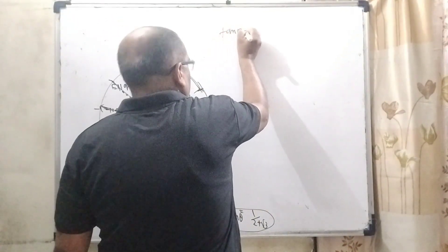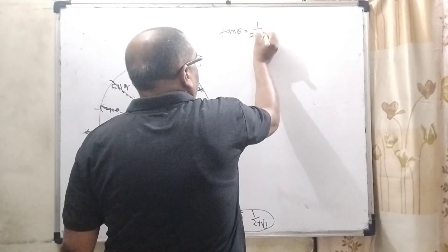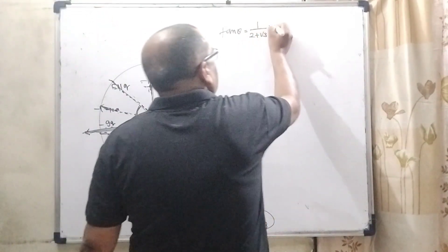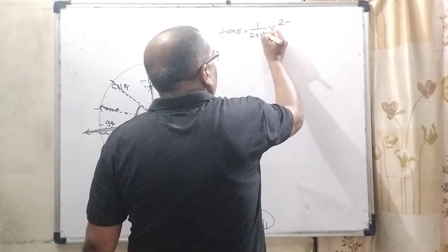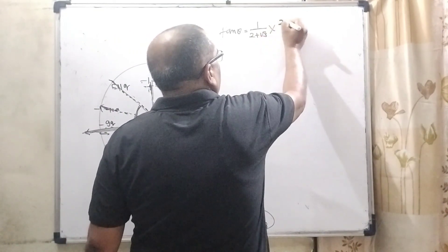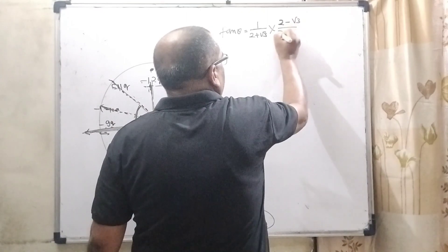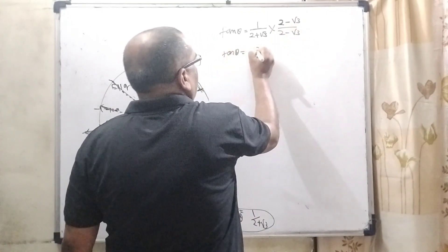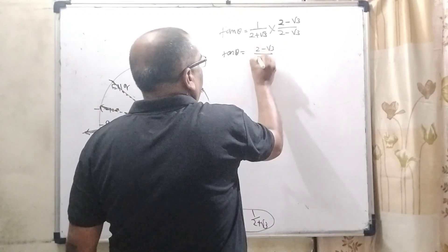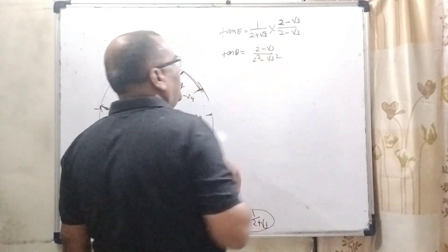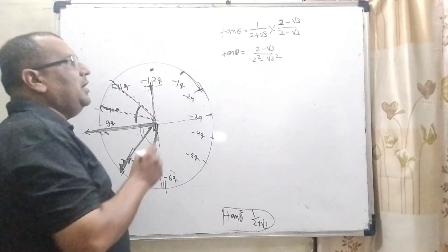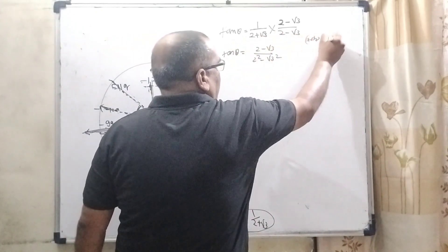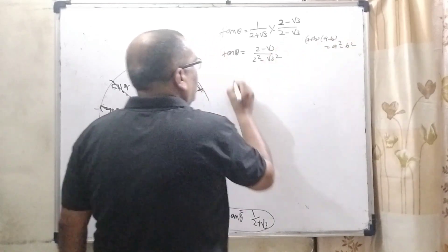Now tan theta is equal to 1 upon 2 plus root 3. Rationalize the denominator. So what is the denominator? 2 plus root 3. Using opposite side, 2 minus root 3, 2 minus root 3, then tan theta is equal to 2 minus root 3, 2 square minus root 3 square. Then here we are using the identity A plus B, A minus B, that is A square minus B square.